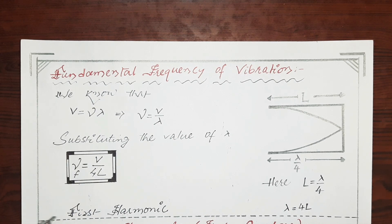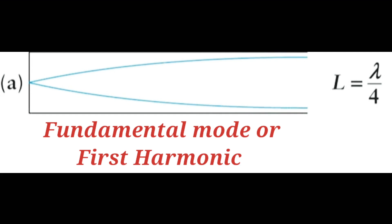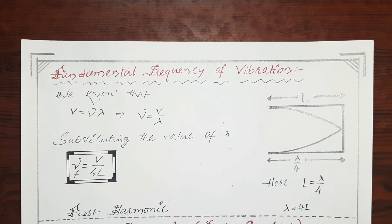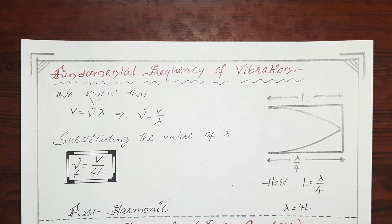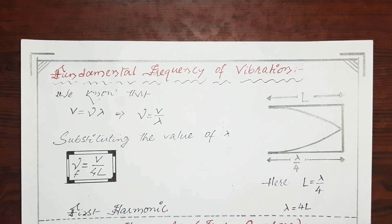This is also called first harmonic. We conclude that in the fundamental frequency, the pipe vibrates with half of a loop with one antinode and one node.